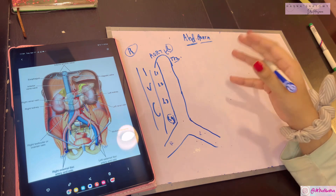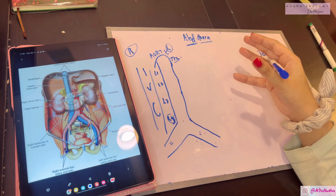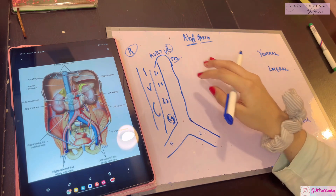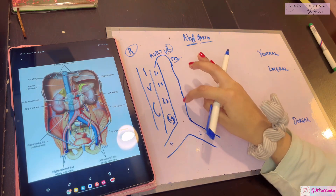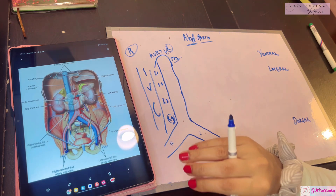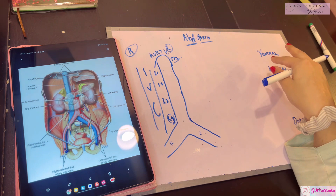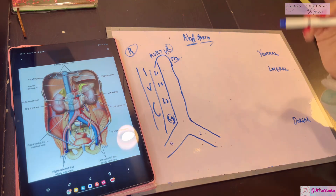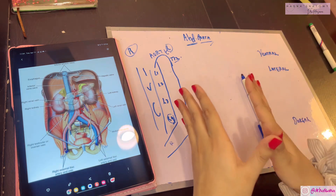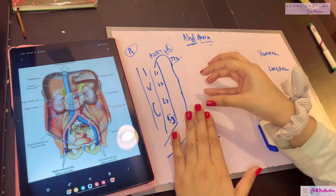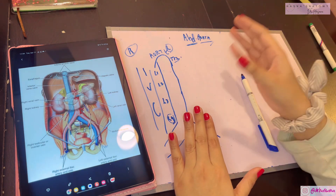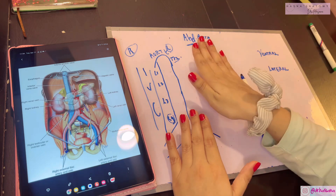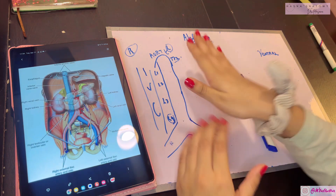It is a very large vessel of your body - the main vessel - because it has to supply blood to the entire body. All the branches that come from the aorta will eventually distribute throughout the entire body. Now let's talk about the relations of the aorta. We're talking about the posterior abdominal wall, which means the aorta is obviously lying against the posterior abdominal wall.